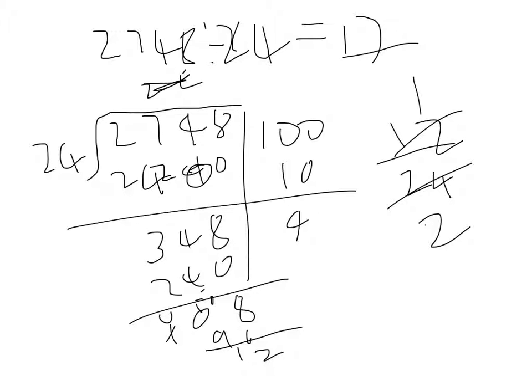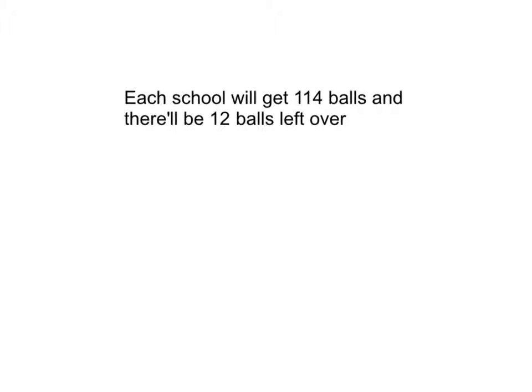You can't divide one ball into half and give it to each school. So they'll donate 114 balls to 24 schools and there will be 12 remainders. Each school will get 114 balls and there will be 12 balls left over.